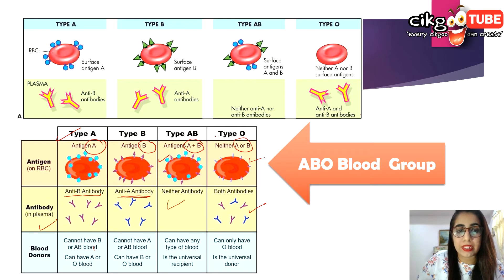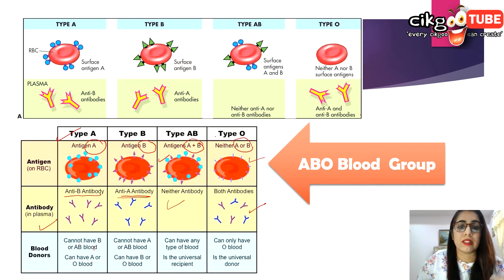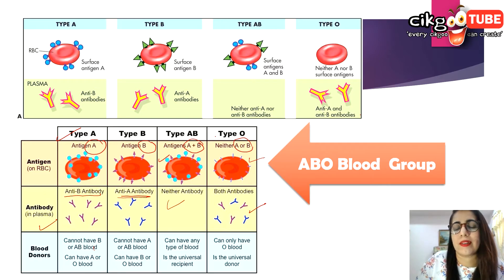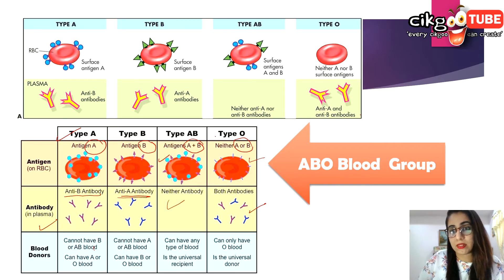For blood donation: type A can only receive from A and O, and can give to A and AB. Type B cannot receive from A or AB — only from B and O. Type AB can receive from everyone — they are the universal recipient — but can only donate to AB. Type O can only receive from O, but as the universal donor, they can donate to everyone.